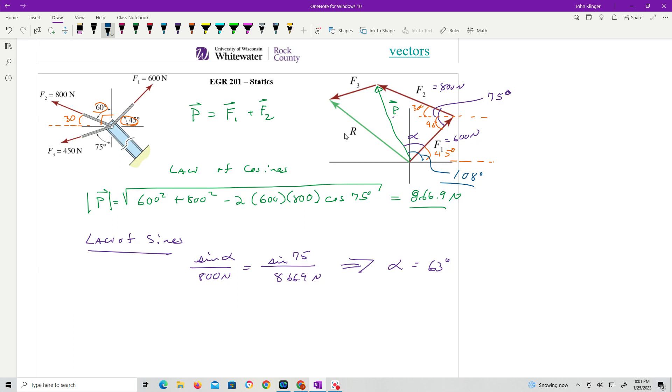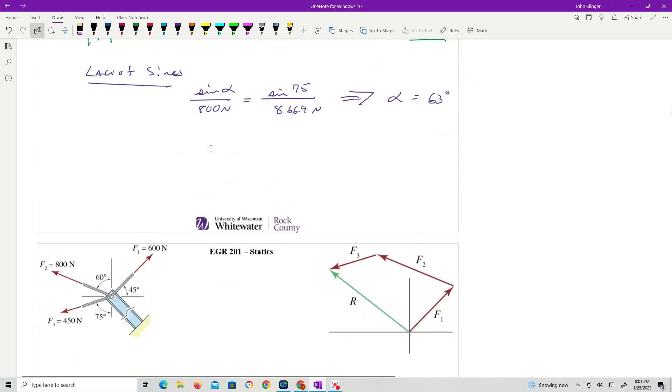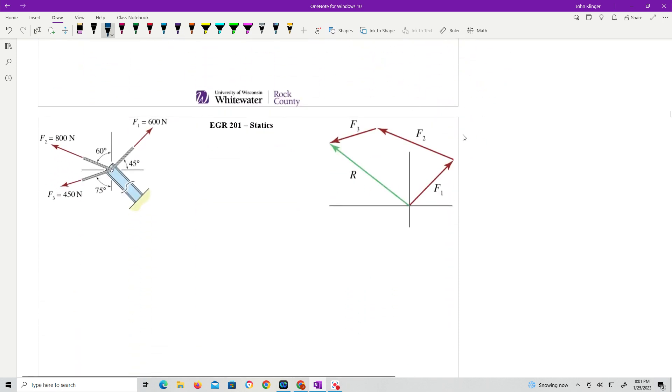So now let's look at this side over here, this other triangle here. All right. So I have found this p, and I said that was 866 newtons. I said this was 108 degrees. We know, if we look at vector 3,